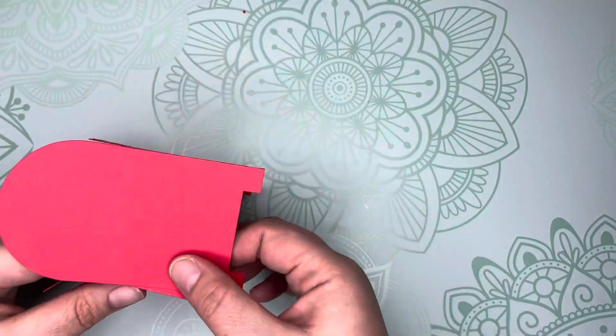Next, we're going to arrange our envelopes inside the pop-up box, gluing them to the hearts of the inserts. Be sure to use different heights and angles to create a full look.